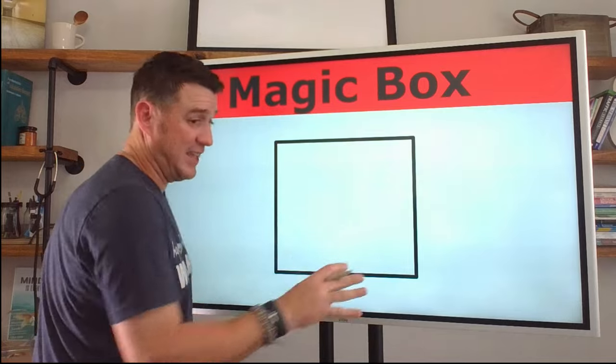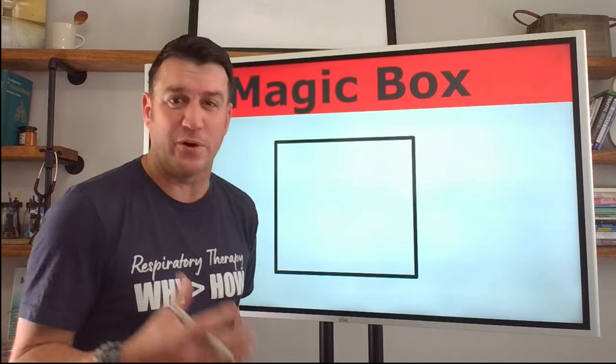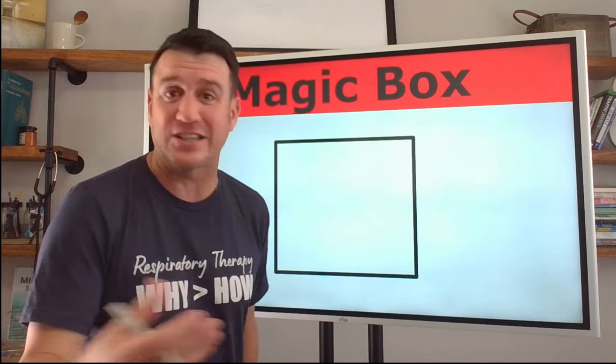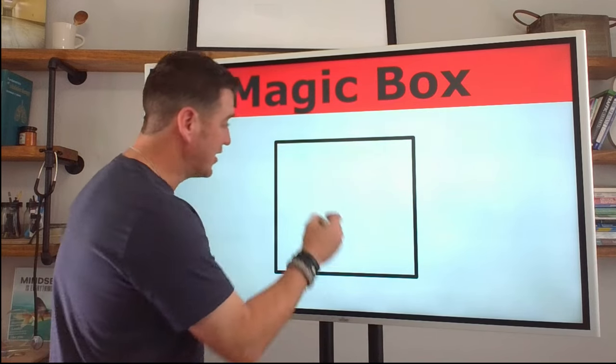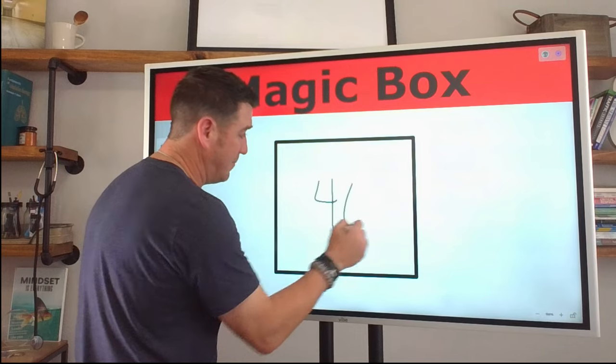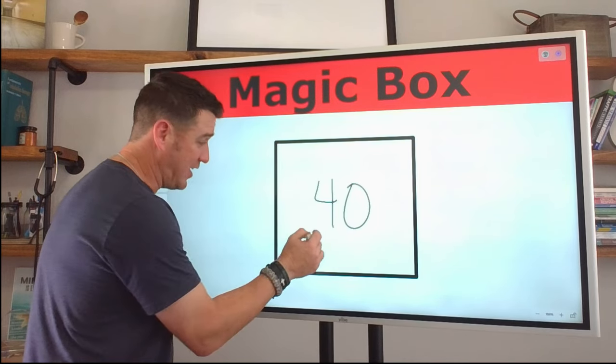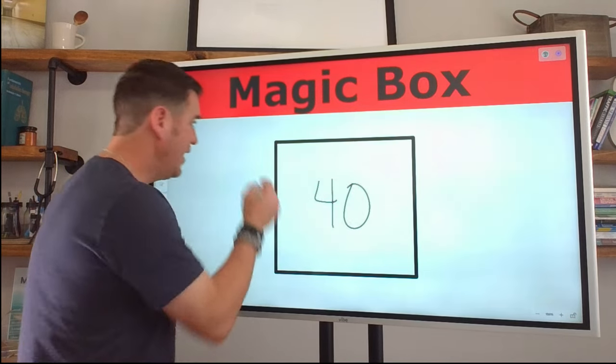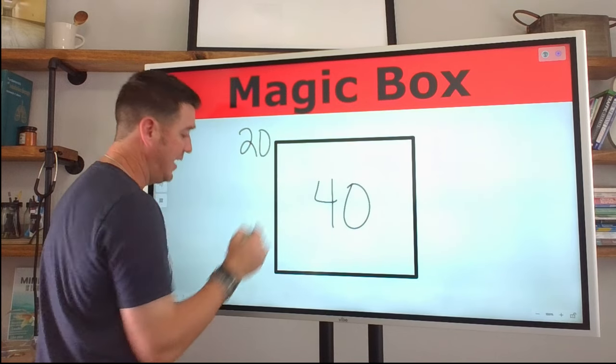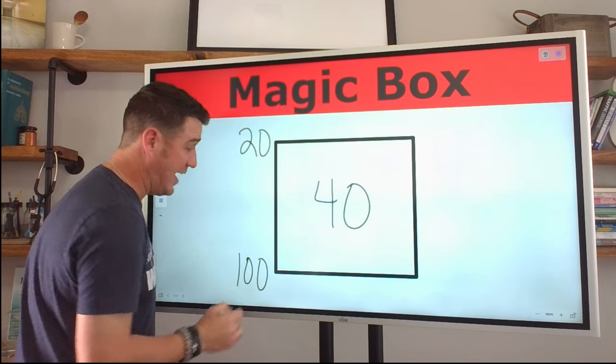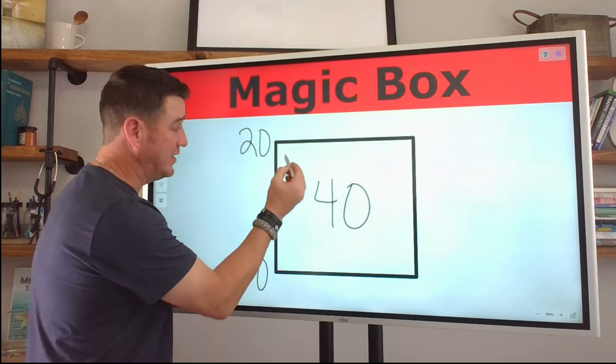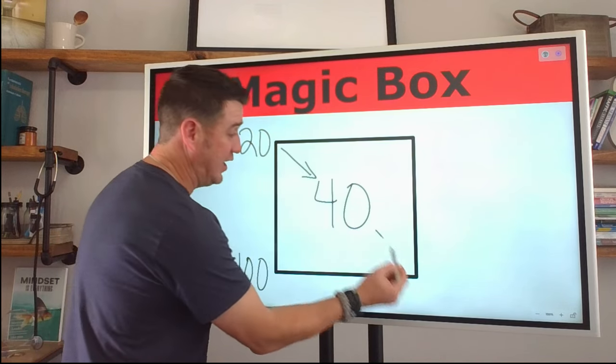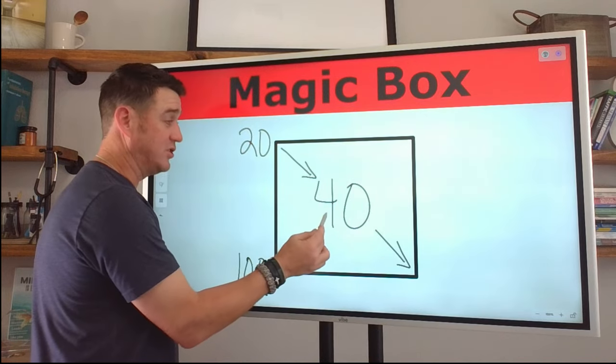Now here's what the magic box says. It says, if you are ever asked, what is the air to oxygen ratio for 40%? Then you're going to put 40% right here in the middle. So your desired FiO2 is 40, you're going to put 20 up here and you're going to put 100 down here.